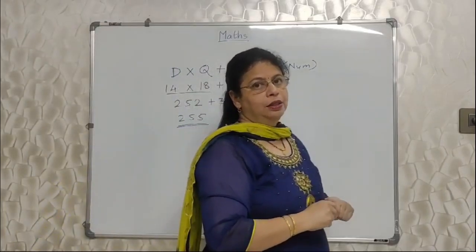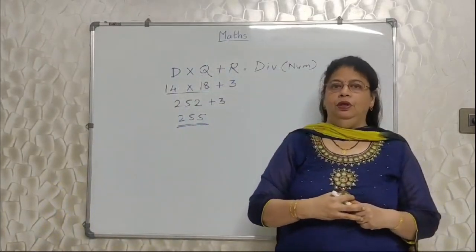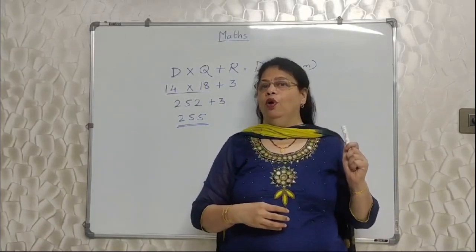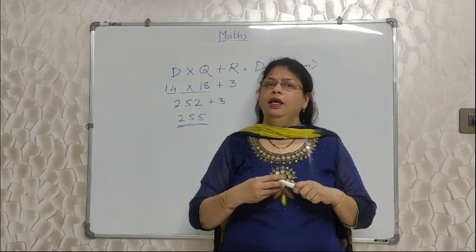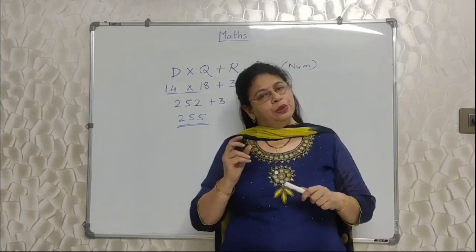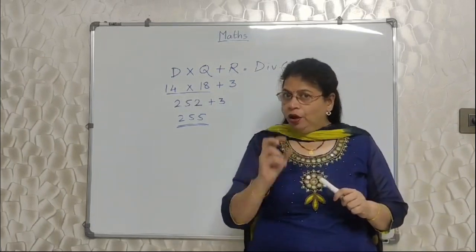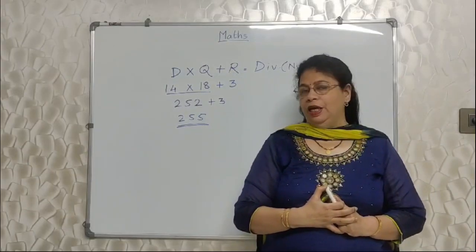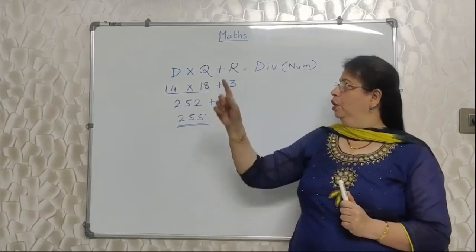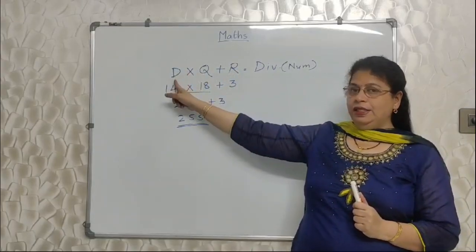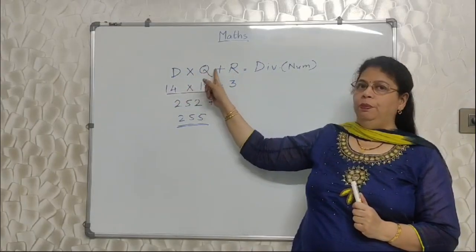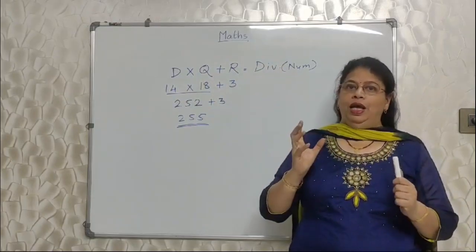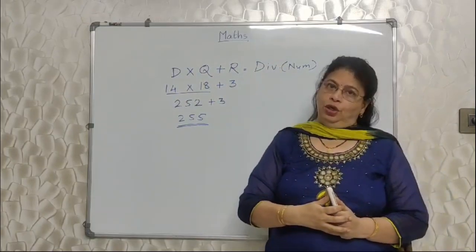BODMAS is the concept. Usmeh jada bachche error karte hai. And unnecessarily, just because of the order of the operation is not correct, they lose marks. I don't want this to happen in case of you. So I want you to learn this formula: divisor into quotient plus remainder is equal to the dividend or the number what they are asking. Chalo, aage barte hai.